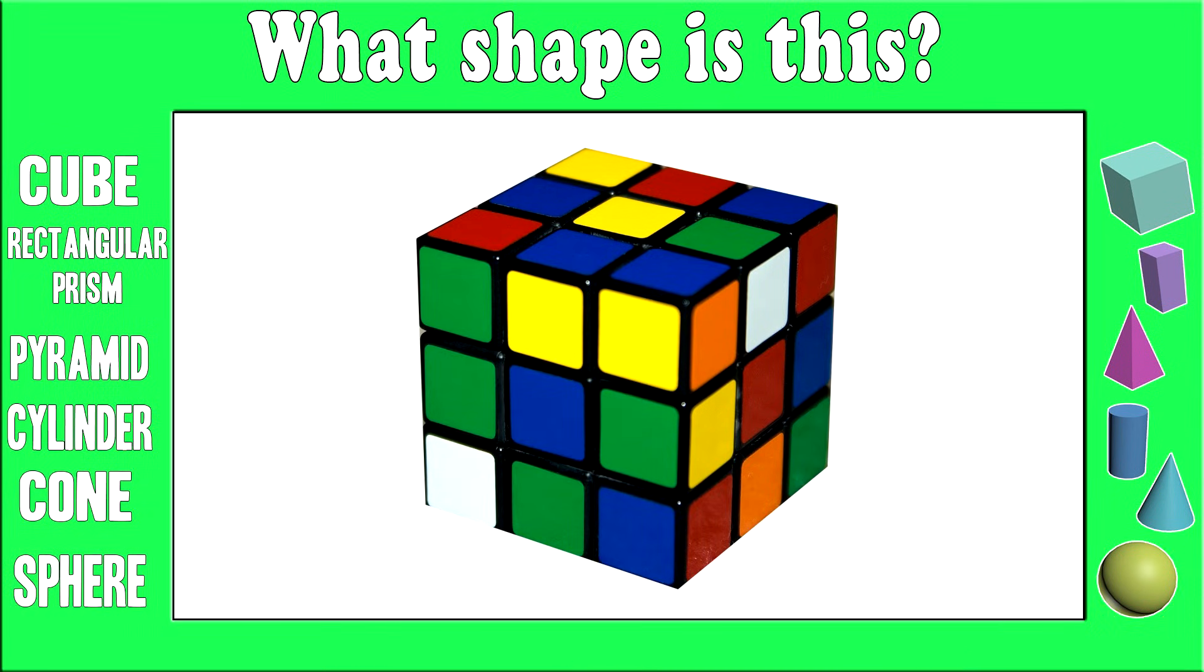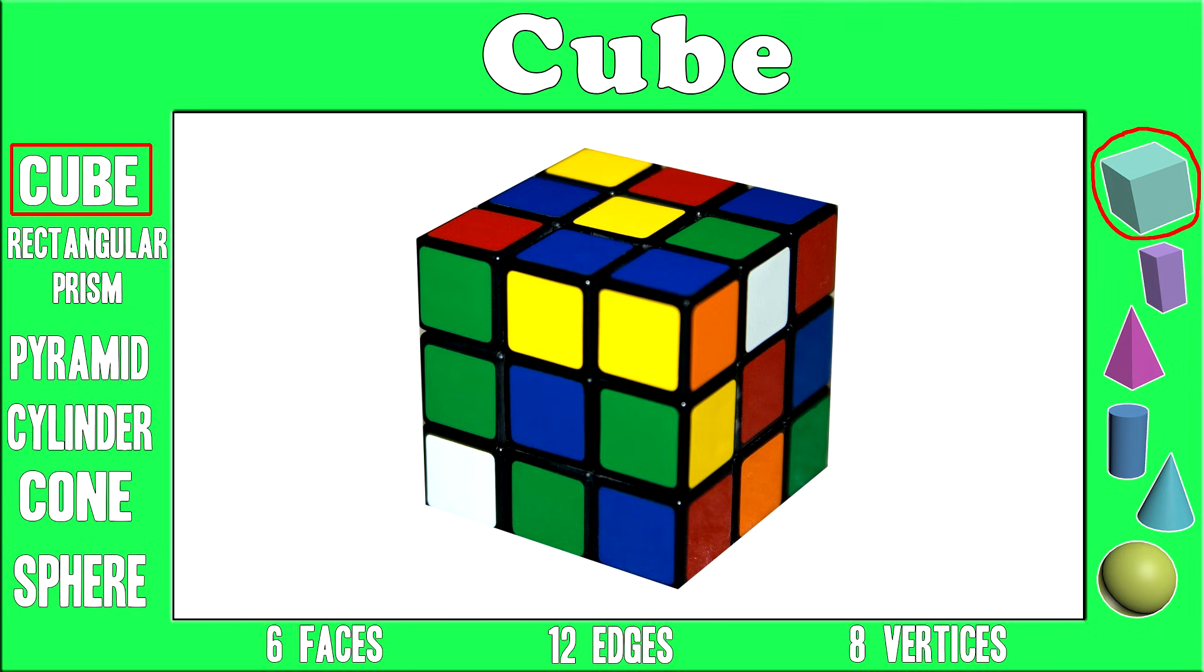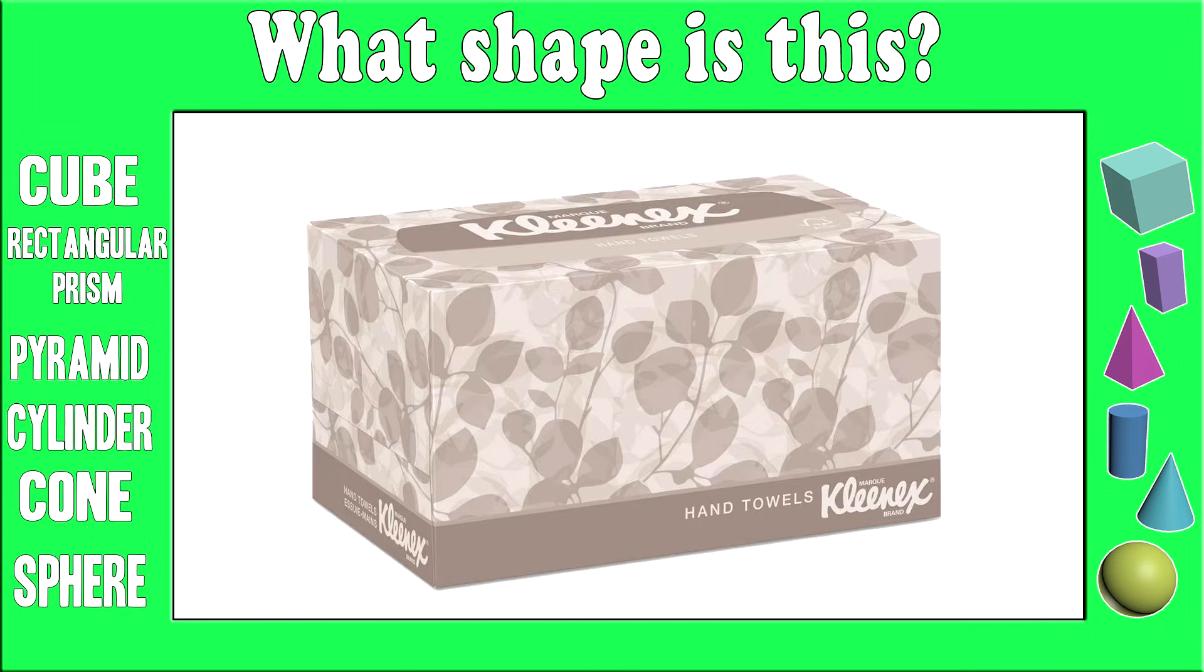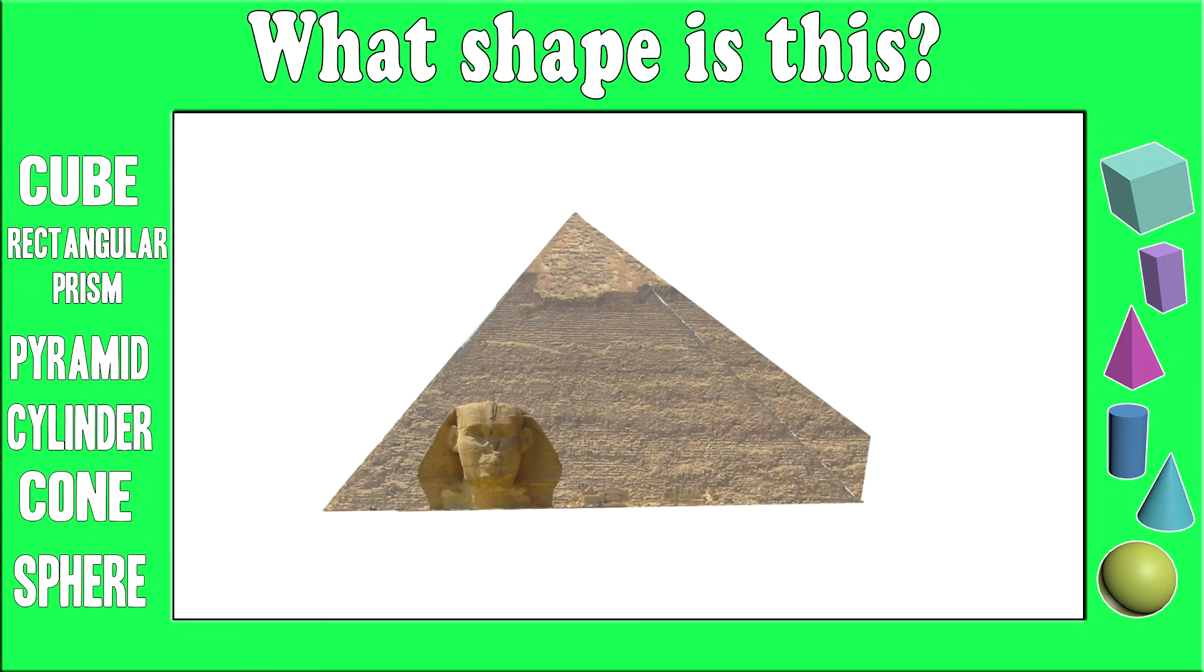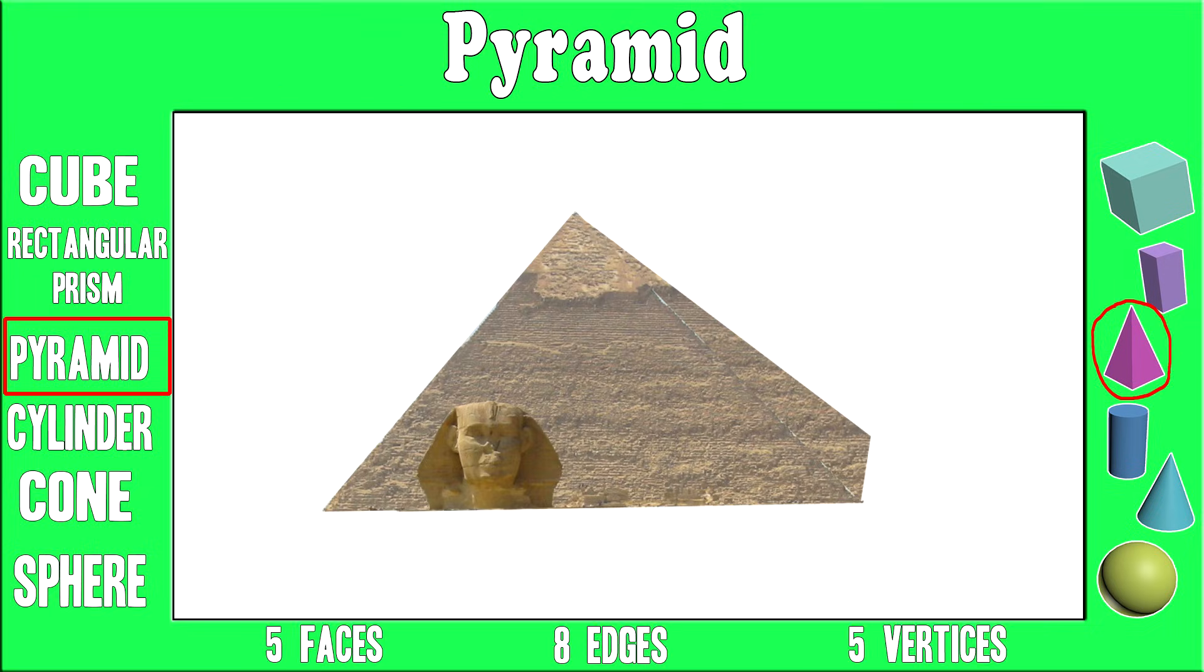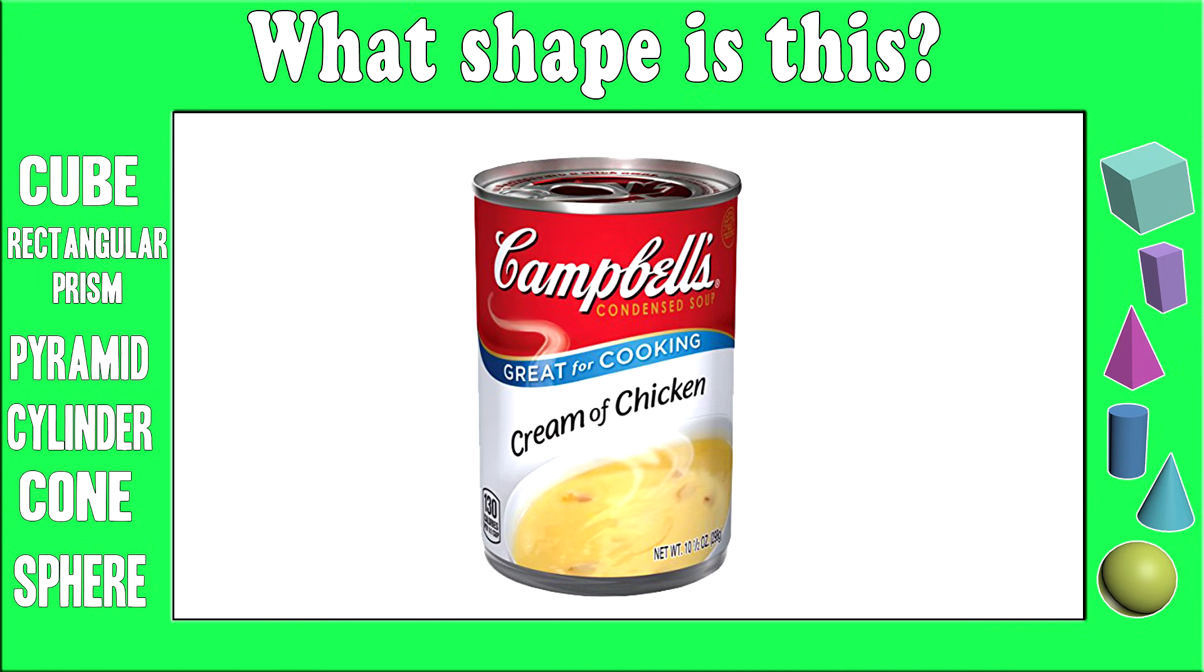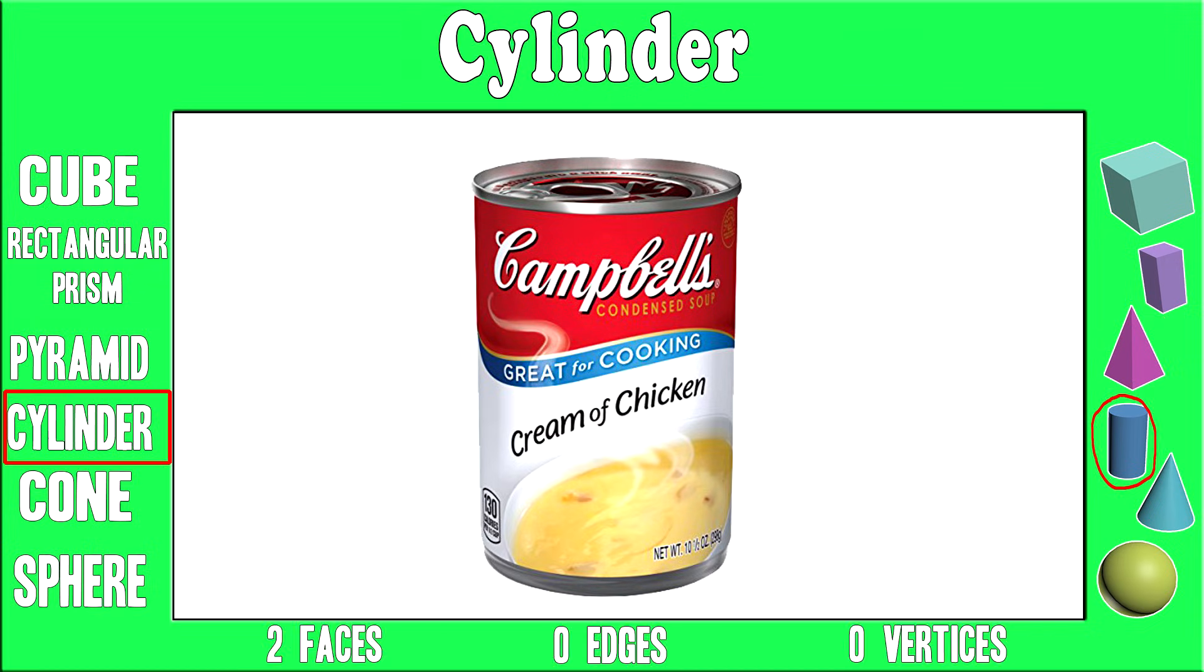So let's review. What shape is this? You're right! It's a cube. What shape is this? Excellent! It's a rectangular prism. Now what shape is this? Perfect! It's a pyramid.